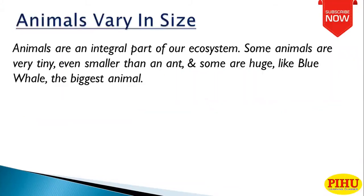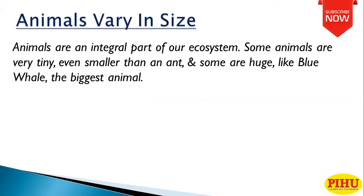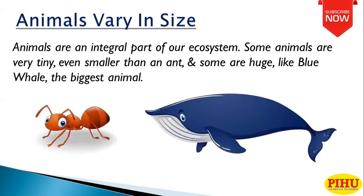Animals vary in size. Animals are an integral part of our ecosystem. The world is full of animals of different shapes, size and colors. There are about 9 to 10 million animal species living on the earth. Some animals are very tiny, even smaller than an ant, and some are huge like the blue whale, the biggest animal.